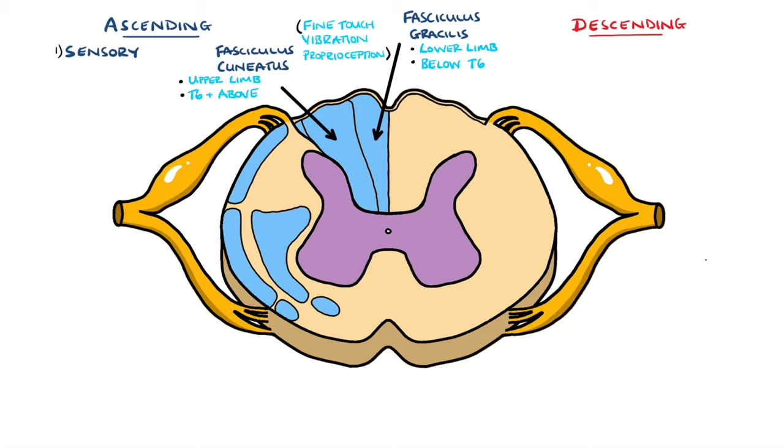You can remember this with the L in gracilis, reminding you of legs or lower limbs. These tracts run ipsilaterally through the spinal cord and decussate in the medulla of the brainstem. Therefore, a spinal cord injury will lead to loss of ipsilateral fine touch, vibration and proprioceptive sensation.